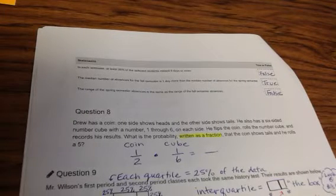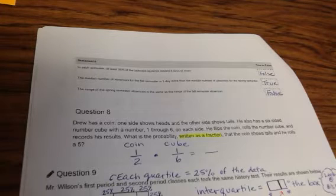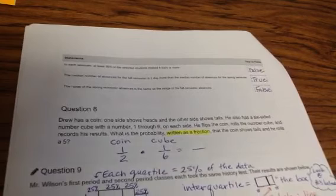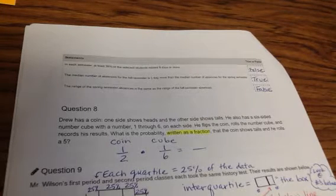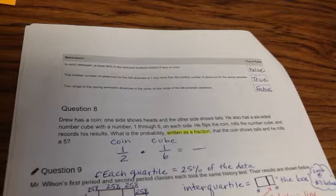Question 8. Again, this is a normal one. Drew has a coin. One side shows heads, and the other side shows tails. He also has a six-sided number cube, or a die, with a number 1 through 6 on each side. He flips the coin, rolls the number cube, and records his results. What is the probability, written as a fraction, that the coin shows tails, and he rolls a 5?